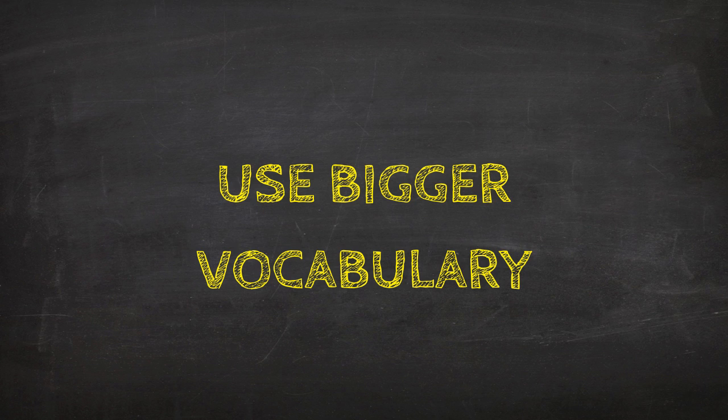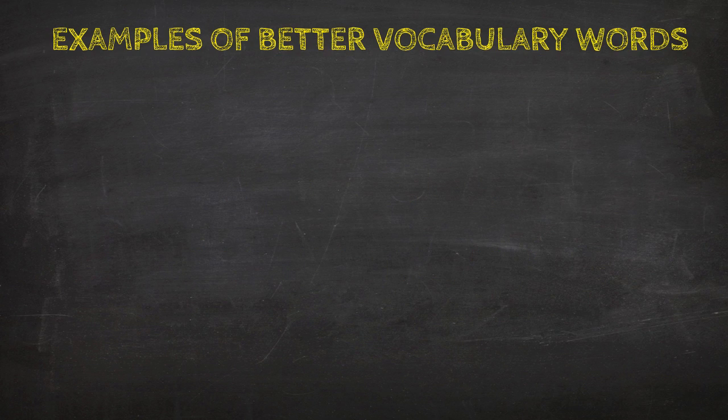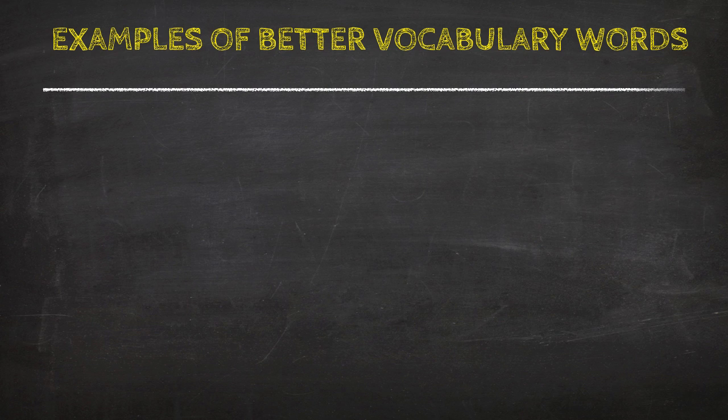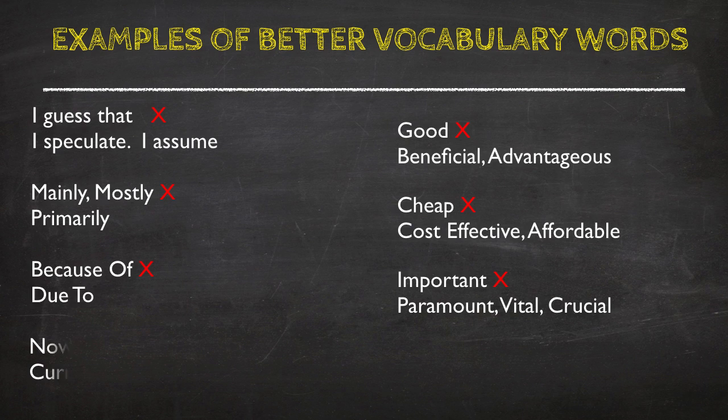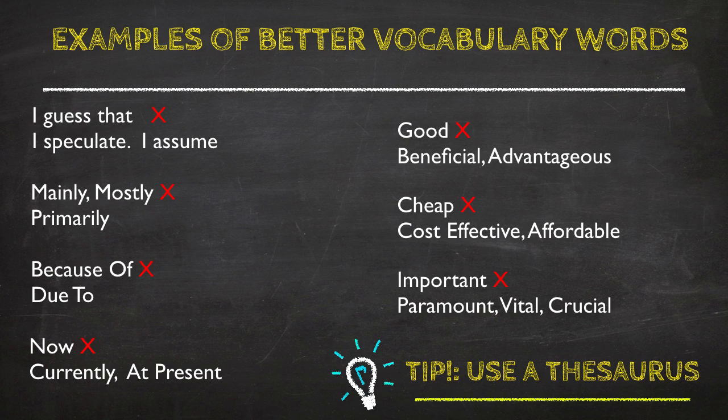Use bigger vocabulary. I mean, you should use a thesaurus to look up the words and choose words that are not expected. A thesaurus is just like a dictionary. Remember, vocabulary is 25% of your overall speaking score. Here are some fantastic examples of better vocabulary words.